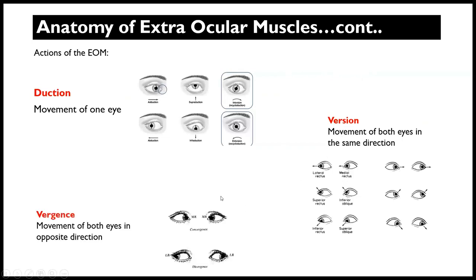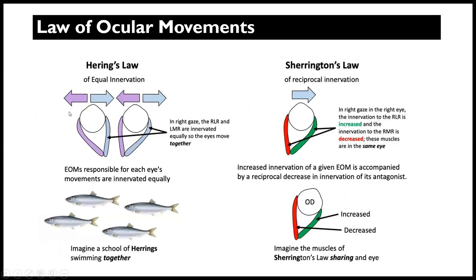When both eyes are moving in the same direction, that is called version. This terminology is important. Then we have vergence, which is similar to version but refers to movement of both eyes in opposite directions. So we can have divergence of the eyes or convergence of the eyes — one eye moving one way and the other moving the opposite way.